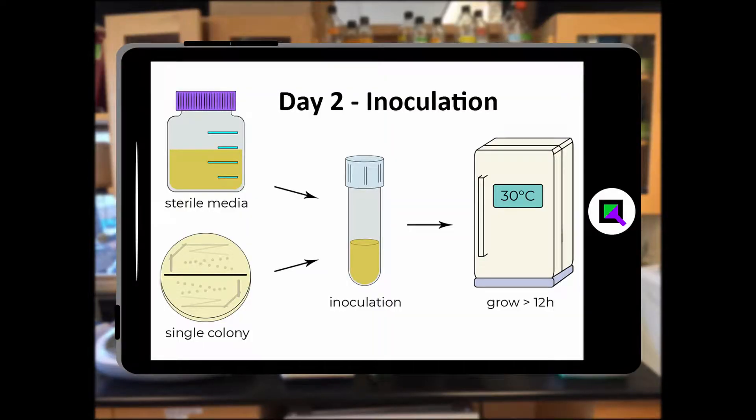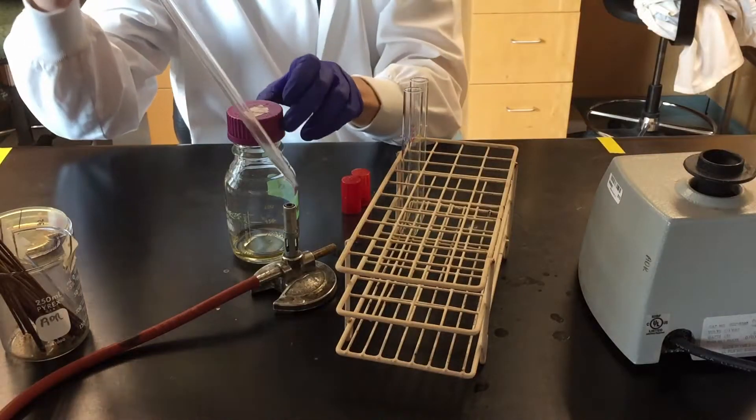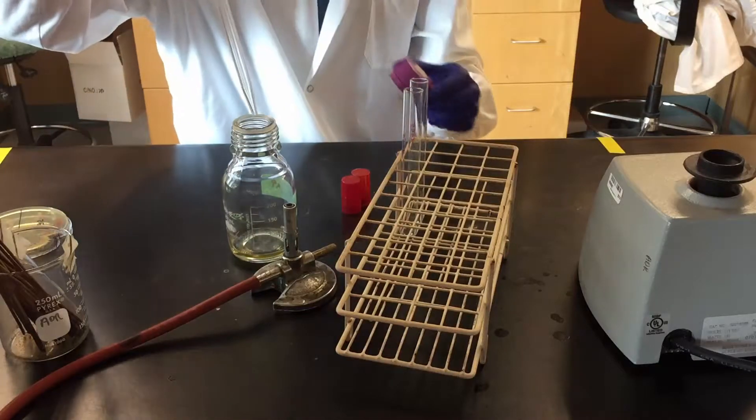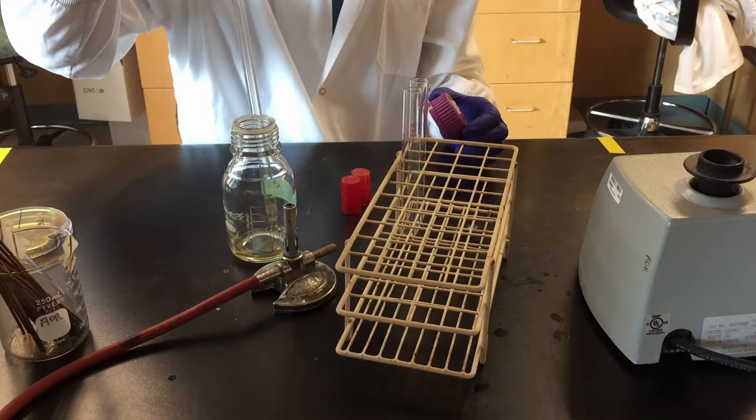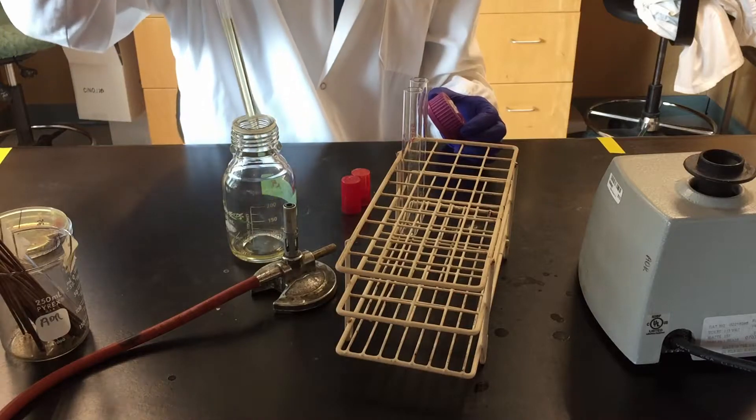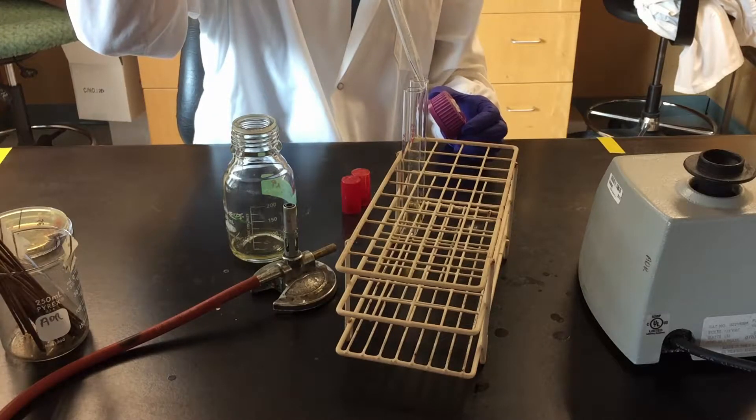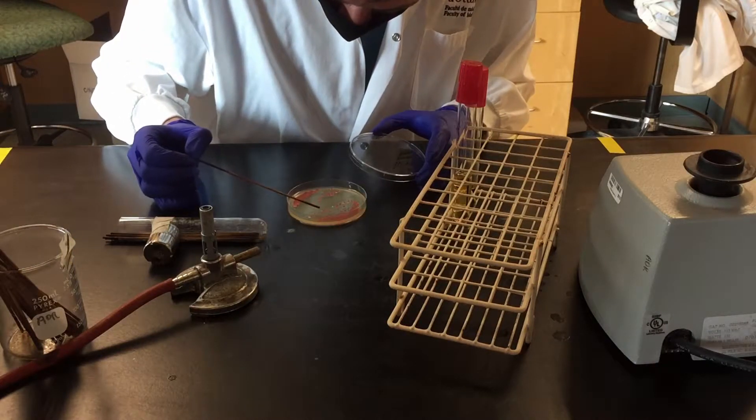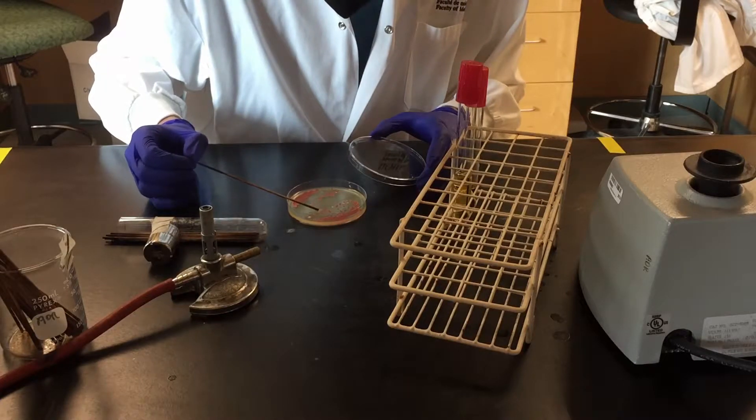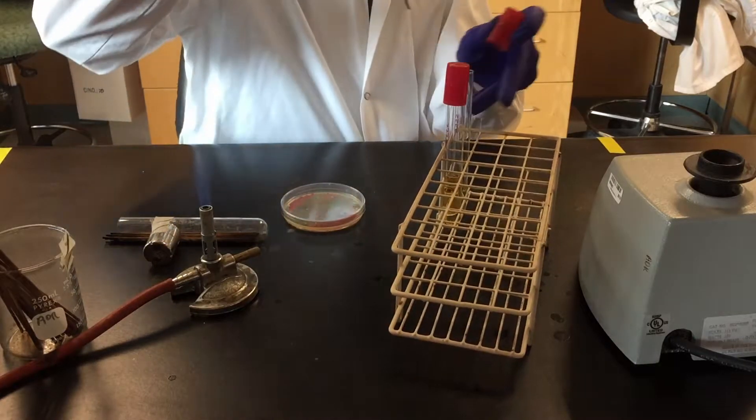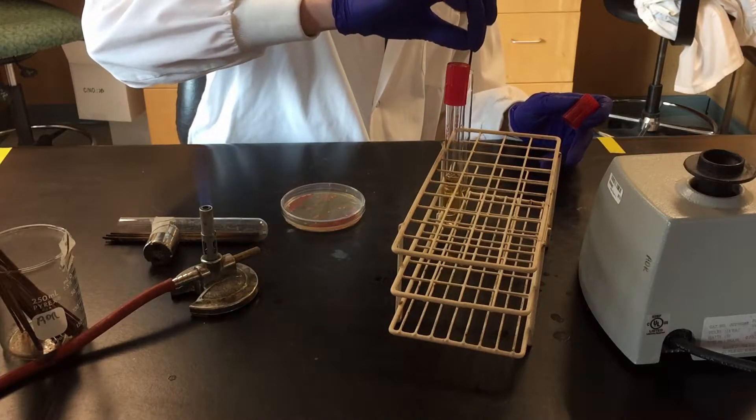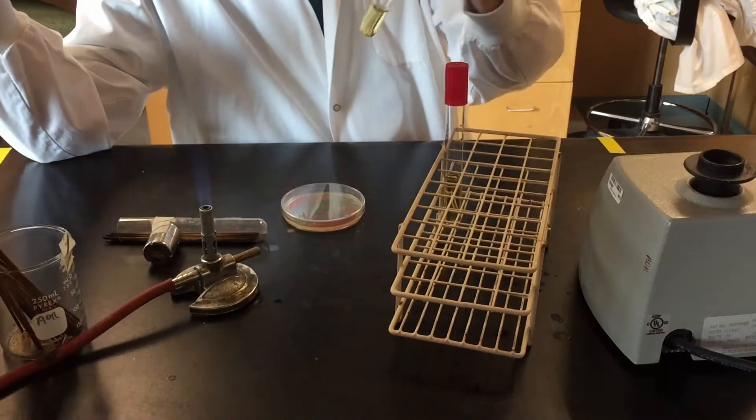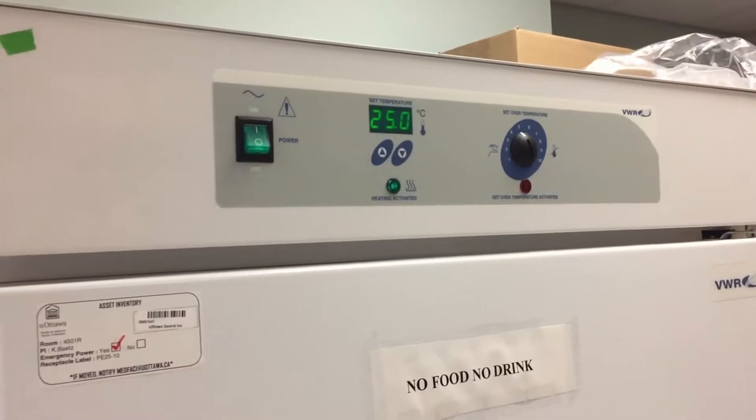Day two, inoculation. Fill a flask with sterile media. Inoculate a small amount of cells to start a liquid culture. Prepare some dilutions if you want to avoid over-inoculation. Incubate the cells overnight at 25 to 30 degrees.